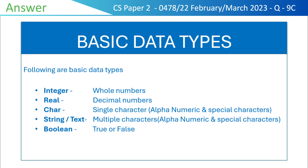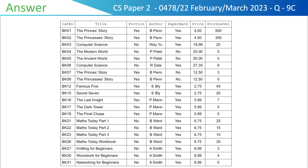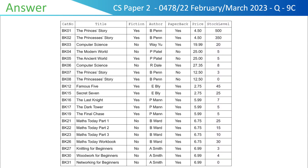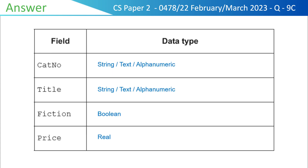Now let's check our data to identify their correspondence with the different data types. The catalog number, title, and author contain alphanumeric data, so their data type would be string or alphanumeric. Fiction and paperback contain logical true or false, so these can be of data type boolean. Price will have real data type because it contains decimals. And stock level will be integer because it contains whole numbers. Great, we have identified data types of all the columns in the given data, so we can easily answer our question like this.